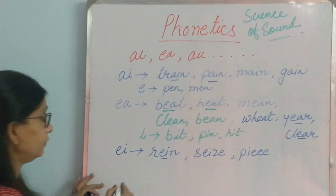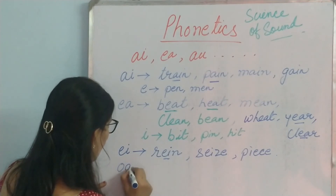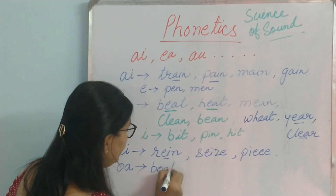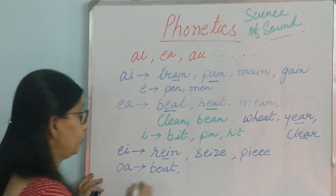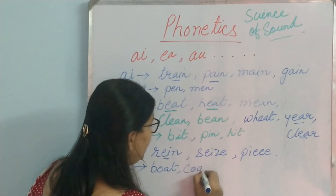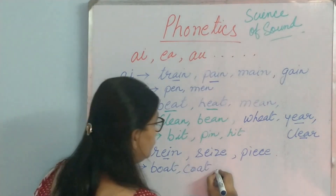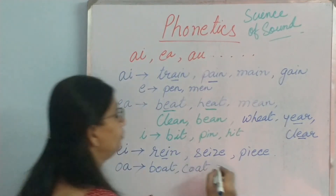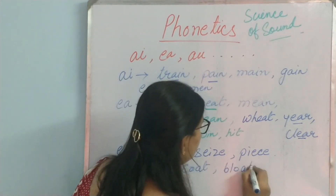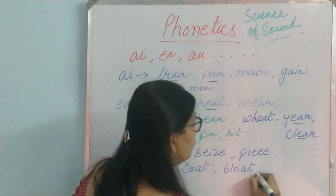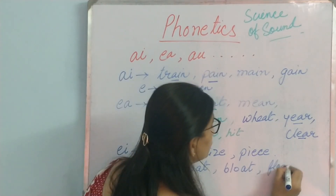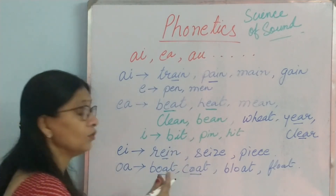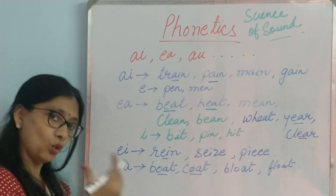Then let us take another one: OA. What sound comes out? Let's see — boat, coat, then bloat, float. So with OA what sound are we getting? We are getting an O sound.